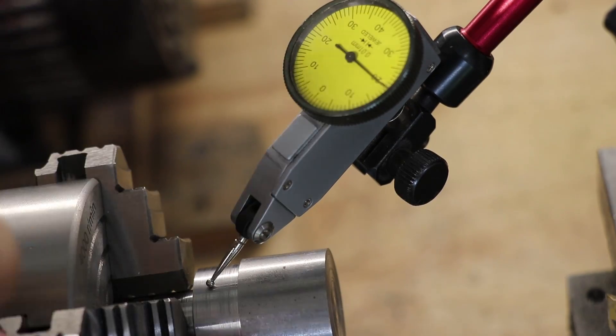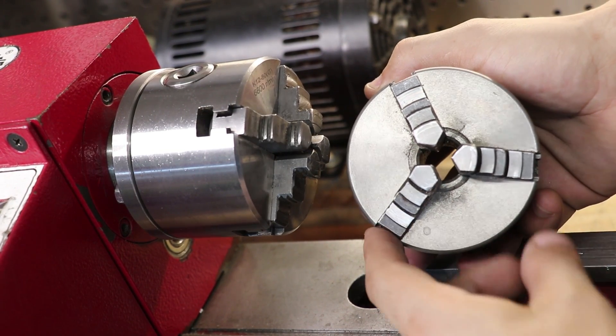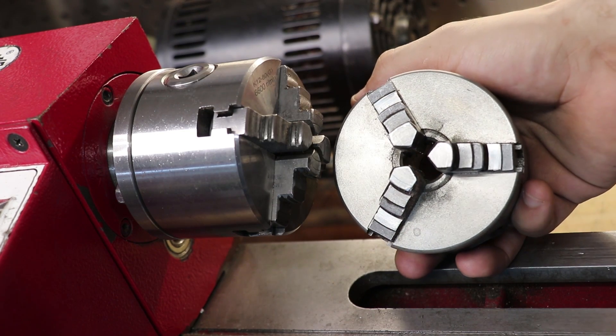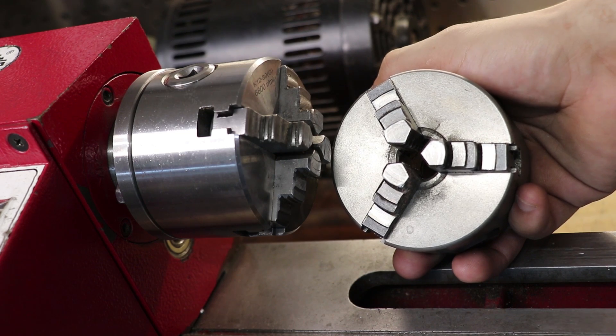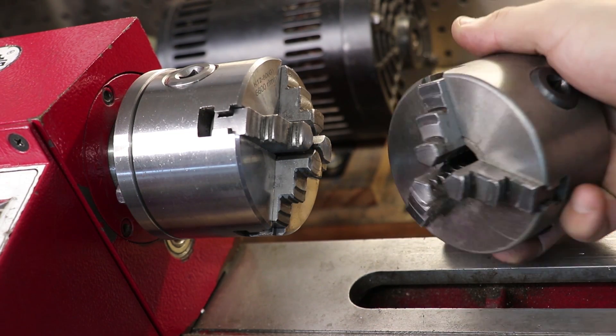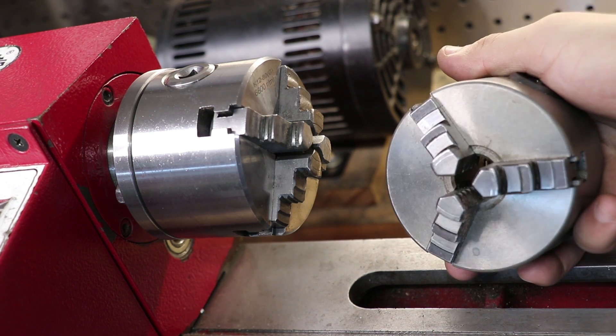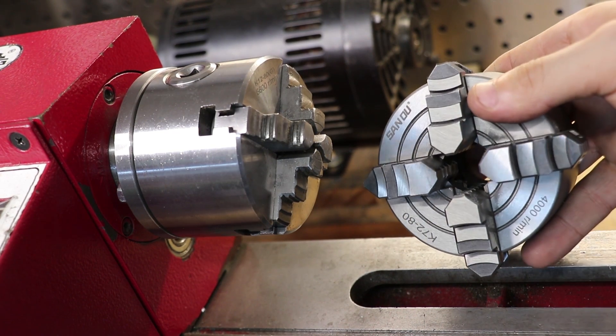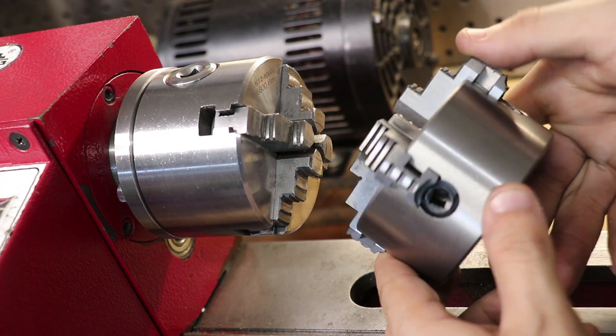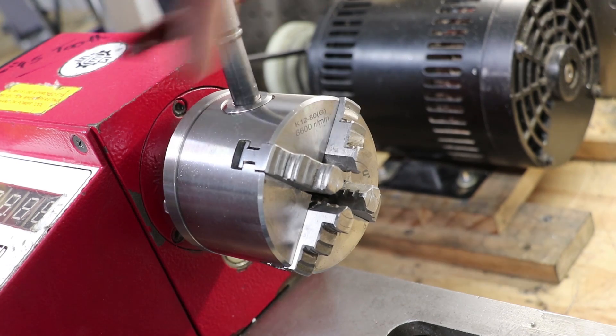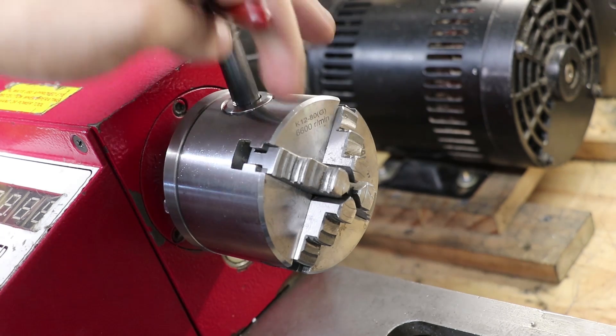And speaking of chucks, the three jaw that the lathe came with should be good enough for most work. My one was decently made and it was good for about 60 microns of run-out and for most work that is fine. However, I really needed a four jaw scroll chuck and a replacement chuck that's about 80 mil in diameter which fits this lathe wasn't that expensive. At the time I was able to pick up the independent four jaw chuck for about $50 on sale and I picked up the four jaw scroll chuck for about 80.